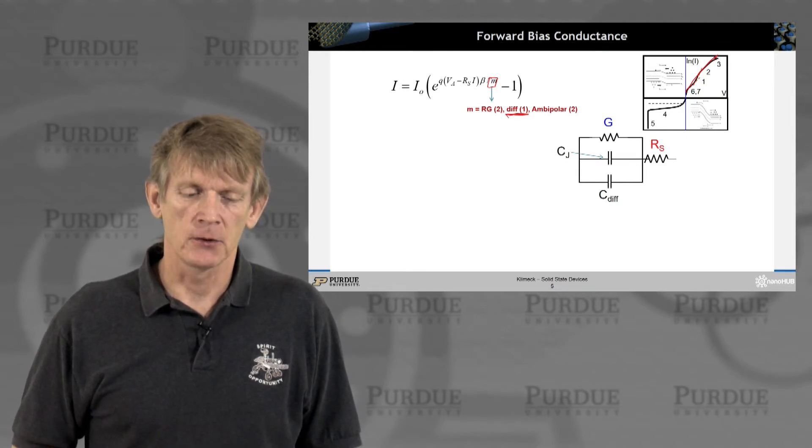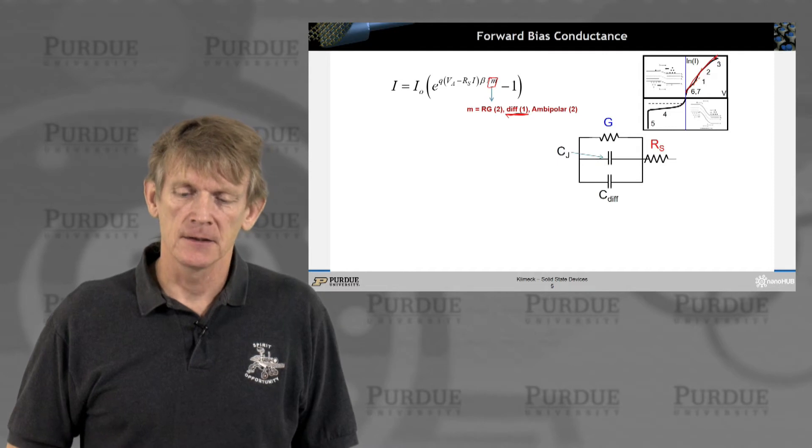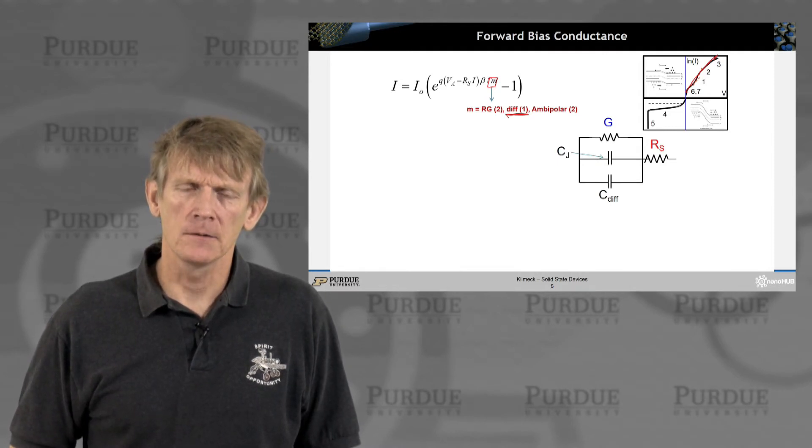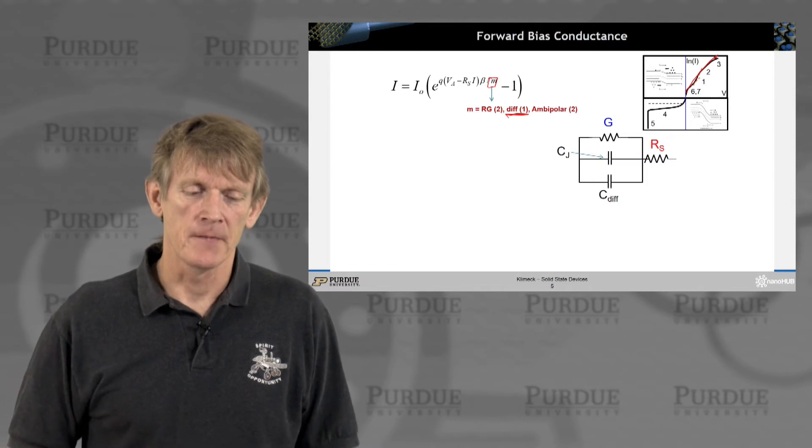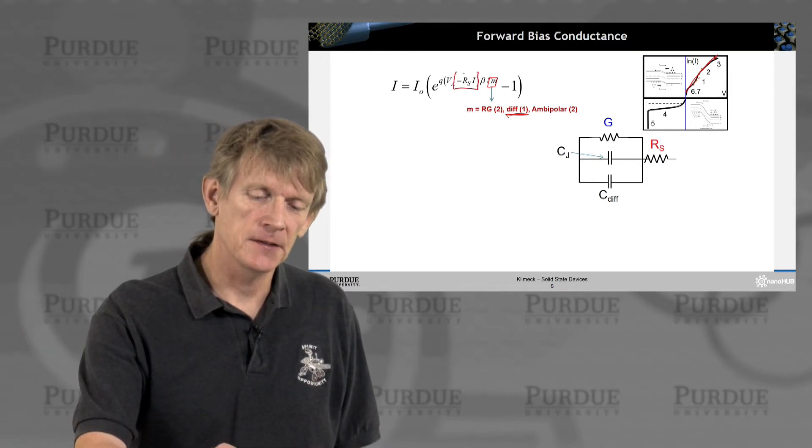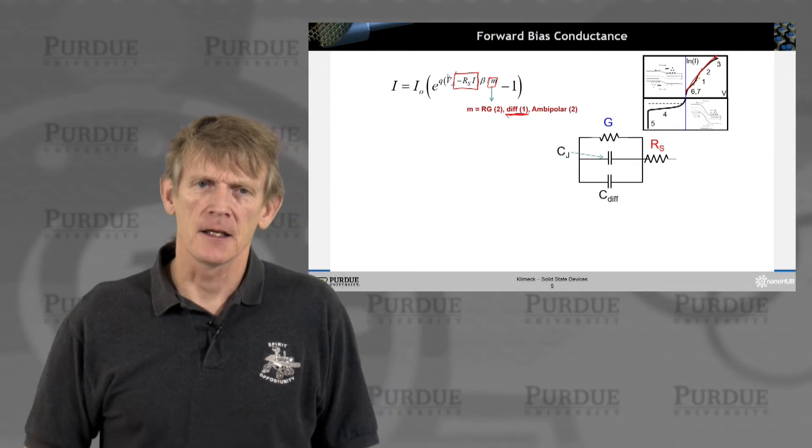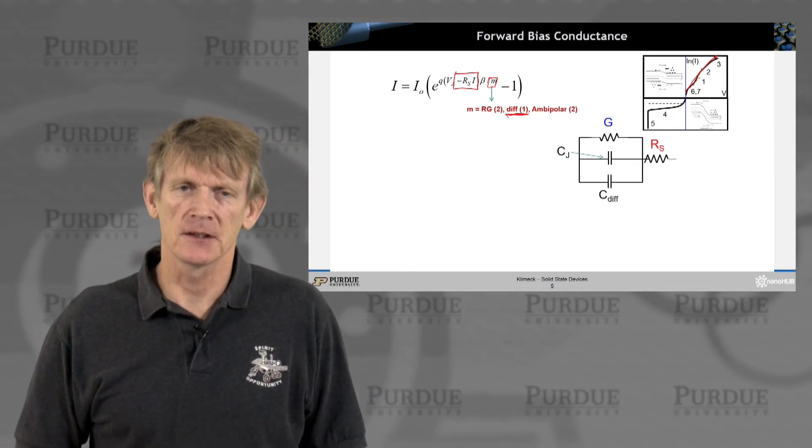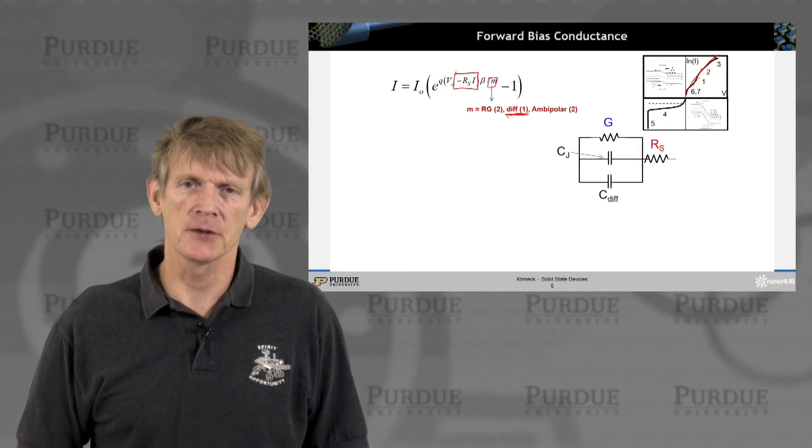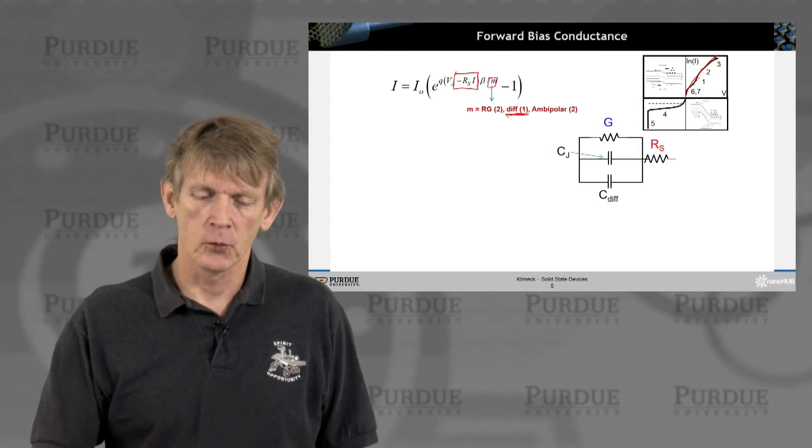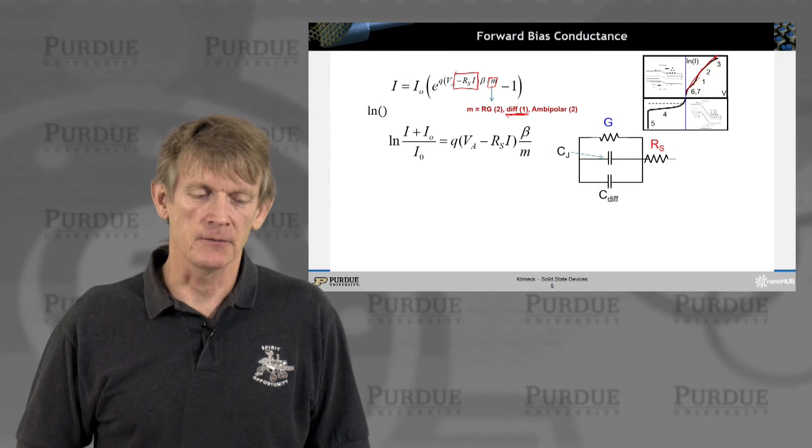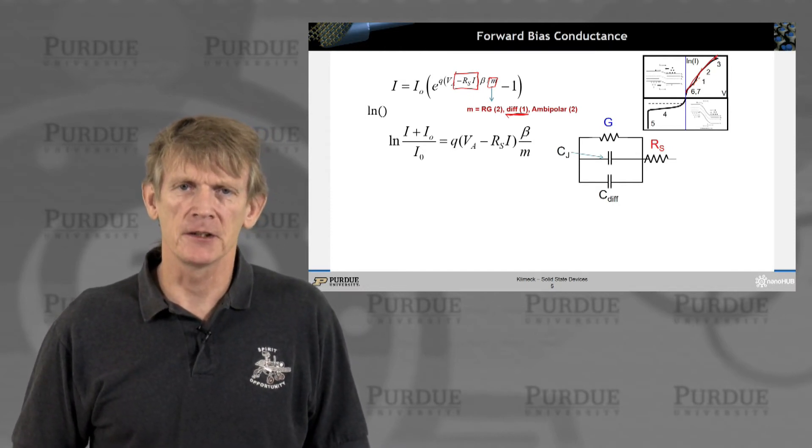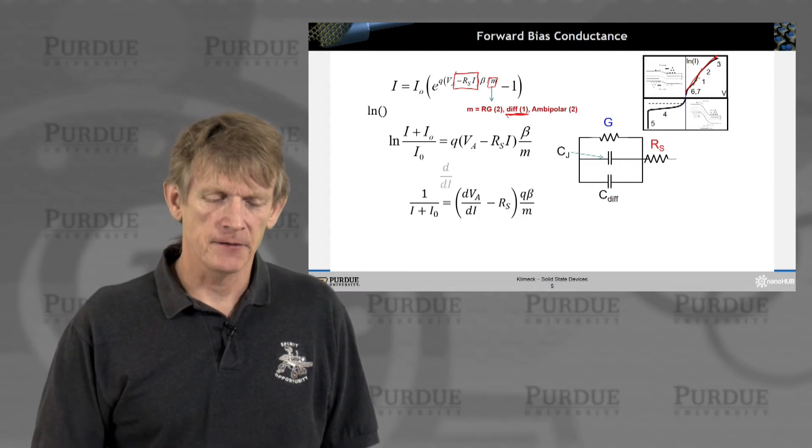The slopes are different than what the perfect slope of one would be. For high biases, we already built in a quasi Fermi level drop in the supplies leading up to the junction. Now we're taking the log of this current expression we derived before, nothing fancy here. We differentiate this expression with dI.